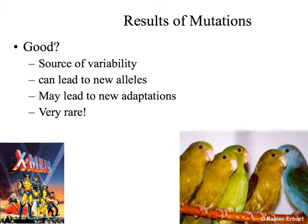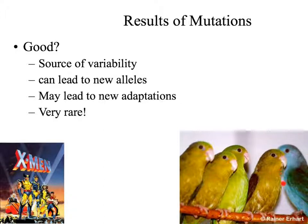The last result of mutations is that they sometimes result in a source of variability in a population. Mutations can sometimes lead to new alleles or variations within a gene. For example, with these birds, most of the population is green. One small change or mutation can result in a blue individual. This trait may be beneficial and may lead to that trait being passed on. Again, this is a very rare occurrence.